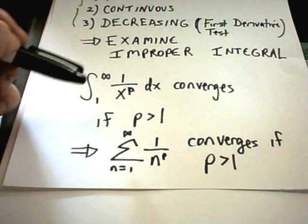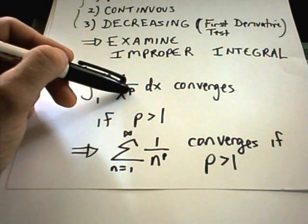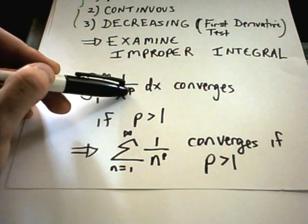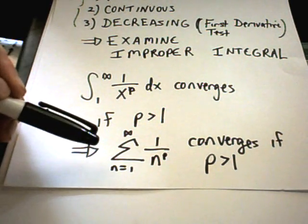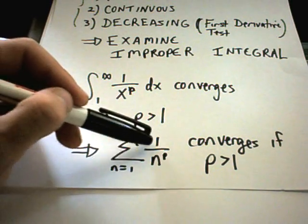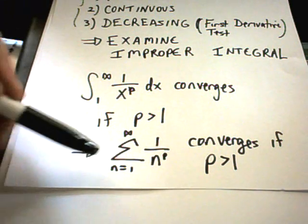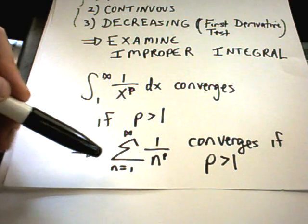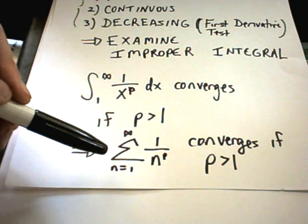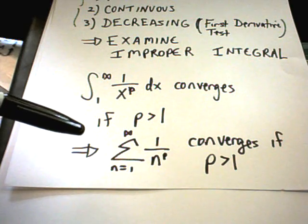Another useful result in this section — you may recall from improper integrals — says the improper integral from 1 to infinity of 1 over x to a power p will converge if p is greater than 1. Translating that into series: the series from 1 to infinity of 1 over n to the p converges if p is greater than 1. These are known as p-series, and you will use them a whole lot to justify whether a particular series converges or diverges.